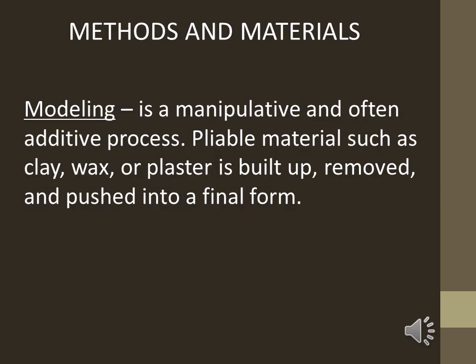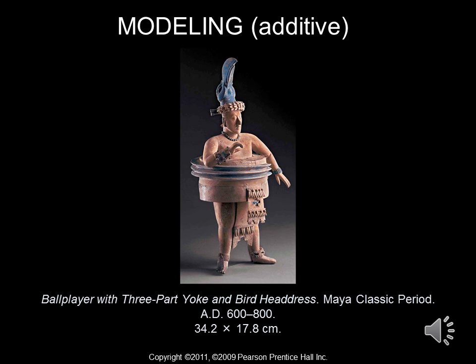We'll now investigate the methods and their accompanying materials. The first method is modeling — it is a manipulative and often additive process. Pliable materials such as clay, wax, or plaster are built up, removed, and pushed into a final form. This ceramic sculpture is an example of additive modeling. The sculptor started with small pieces of clay and formed them into shapes that would eventually resemble the human form. Being a ceramic sculpture, it was made from clay earthenware, fired in a kiln, and then painted by hand.